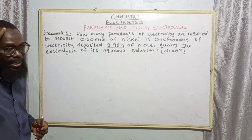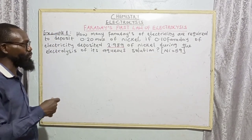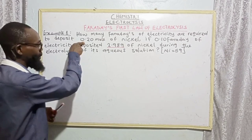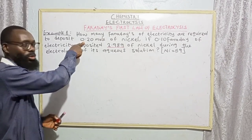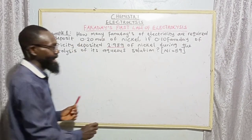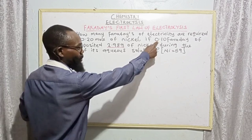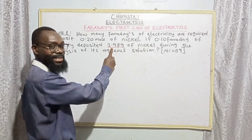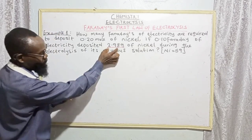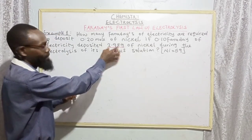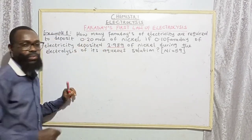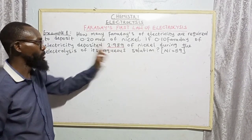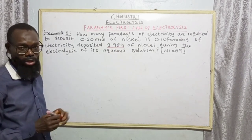Now what we have to note here is that in this case, we are asked to find how many Faradays will be required to deposit 0.20 mole, when 0.10 Faraday has been used to deposit 2.98 grams. This one is in mass — 2.98 grams — and this one is in moles. So we are going to find a way of changing this mass to moles so that it will be easier for us to calculate.